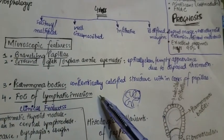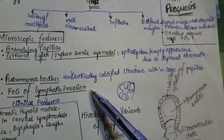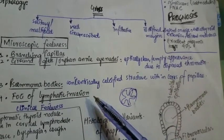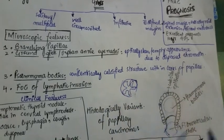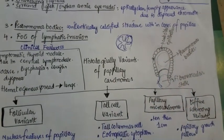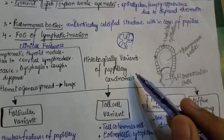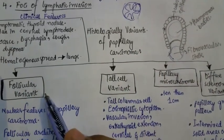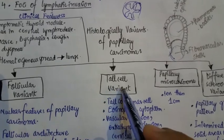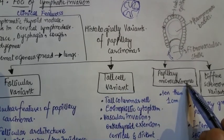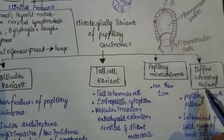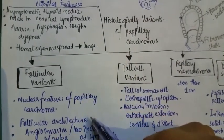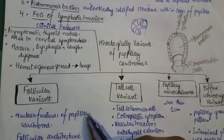There are also foci of lymphatic invasion, but no evidence of hematogenous spread. There are four histological variants of papillary carcinoma: the follicular variant, the tall cell variant, papillary microcarcinoma, and the diffuse sclerosing variant.